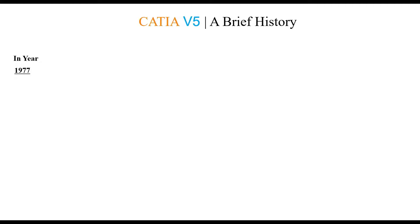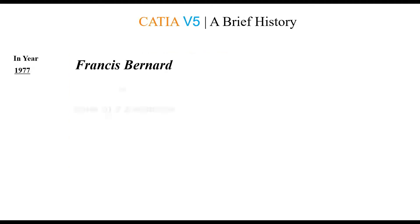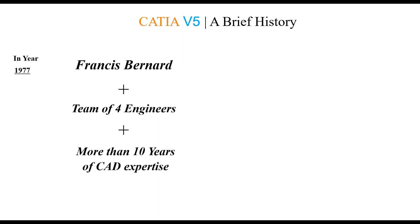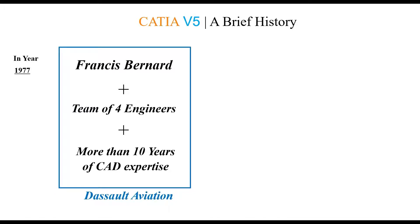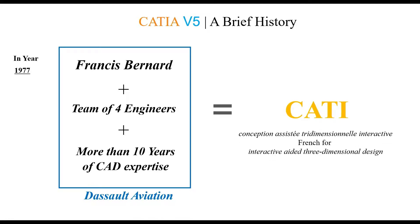Then in 1977, a man called Francis Bernard, an employee of Dassault Aviation, along with a team of four engineers, having worked for more than 10 years on CAD under the roof of Dassault Aviation, developed and launched a software in-house to provide 3D and NC functions for the CADAM software they used at that time to develop Dassault's Mirage fighter jet. That software was initially named CATI, a French acronym for interactive aided 3D design, developed inside Dassault Aviation.